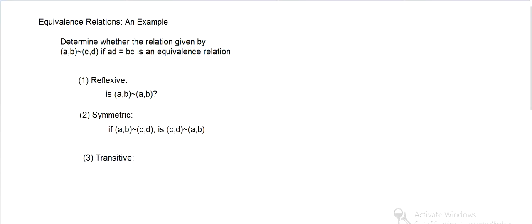And then transitive. If the first pair is related to a second pair, and the second pair is related to the third pair, then is the first pair related to the third pair? So first pair related to second, second related to third, so is the first pair related to the third pair.